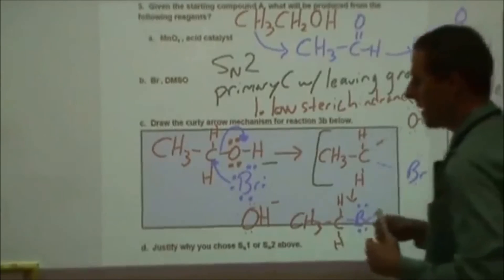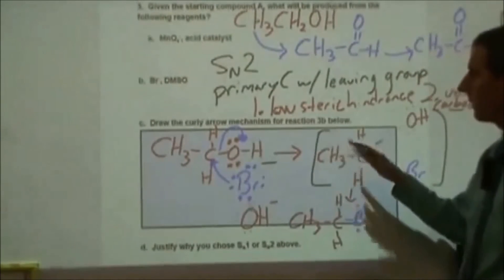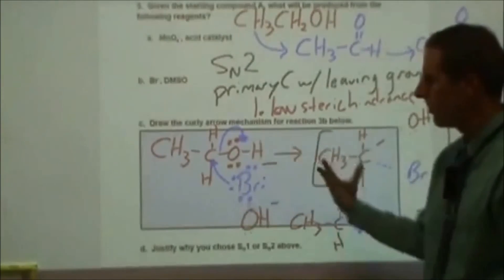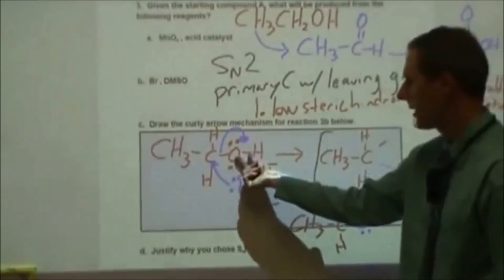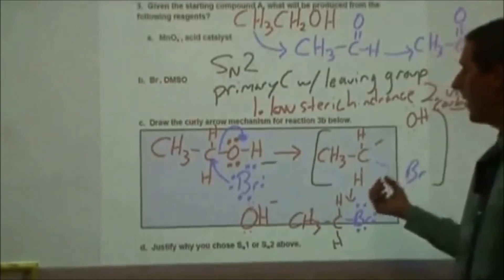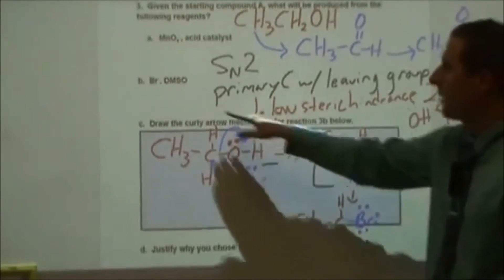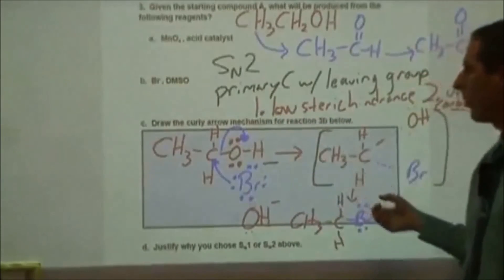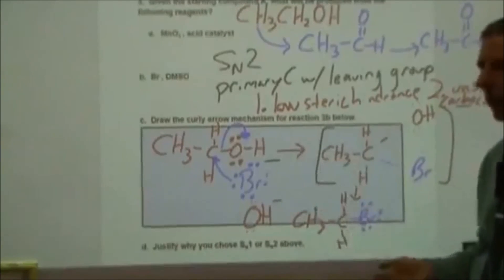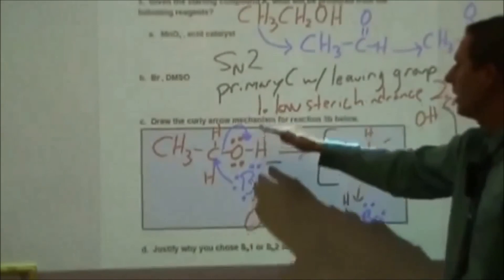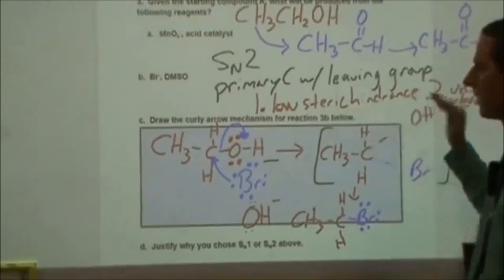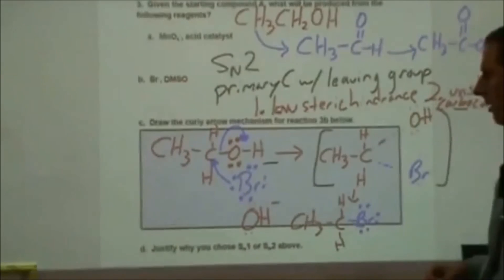If this were a secondary carbon we'd have to look at other factors: our solvent, our nucleophile, and our leaving group. Our leaving group is not a good one here — we'd prefer an acid catalyst to turn it into water. The bromide is a good nucleophile, which helps SN2. Our solvent was dimethyl sulfoxide, which is polar aprotic, so it won't hinder SN2 much. But for a primary carbon, none of those factors will trump the fact that it's primary — that's going to be your main determining factor for that reaction.